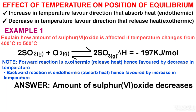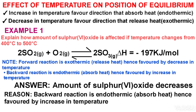So the answer to our question: a temperature change from 400°C to 500°C is an increase in temperature. The answer is: the amount of SO₃ decreases. The reason is the backward reaction is endothermic (absorbs heat), hence favored by an increase in temperature. Or we can say equilibrium shifts from right to left because an increase in temperature favors the direction that absorbs heat.